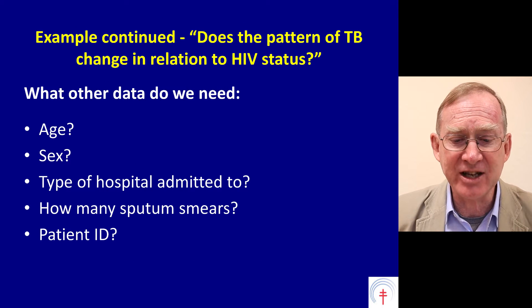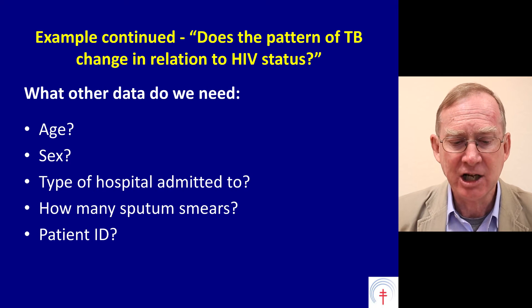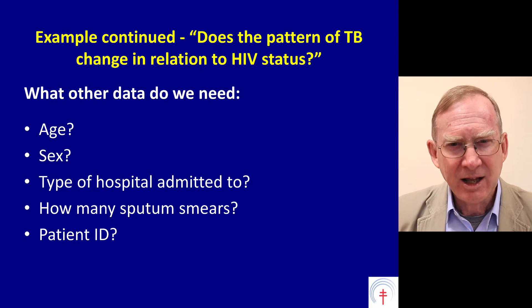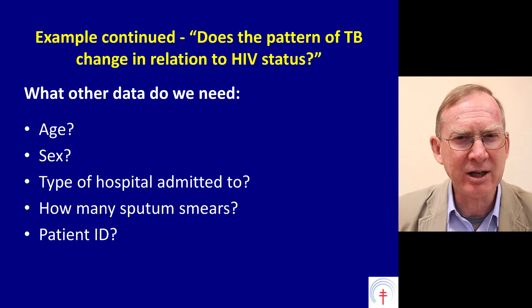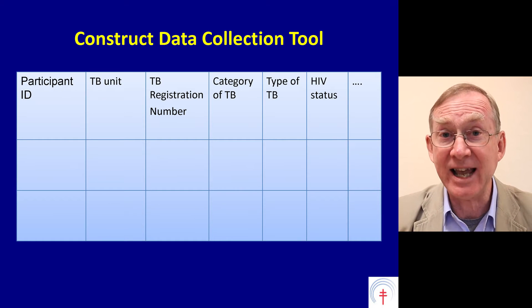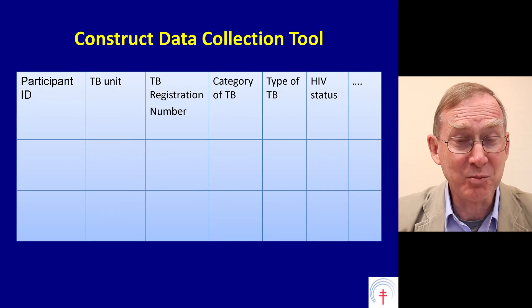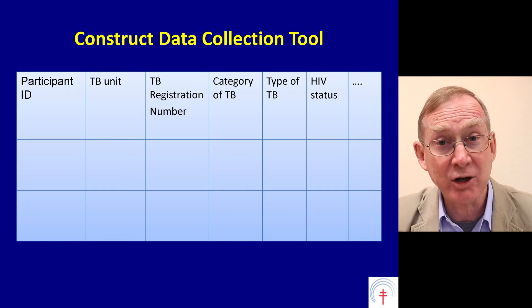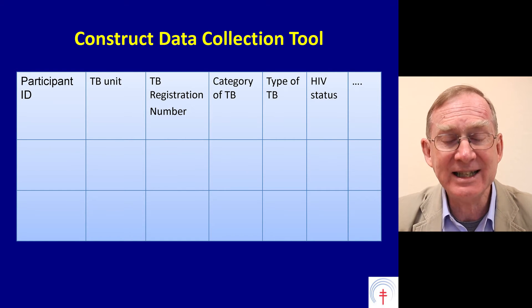Does the pattern of TB change in relation to HIV status? What other data do we need? Do we need age? Do we need sex? Do we need the type of hospital admitted to? How many sputum smears? The patient's ID number? You have to think through what you're going to present in this study. We decided we did not need age, sex, and other parameters, but we did need a participant ID number so we could check data accuracy if we needed to go back to records, and we needed to know which TB unit we were getting this data from.